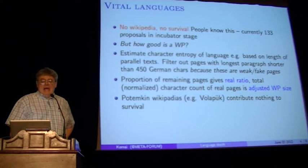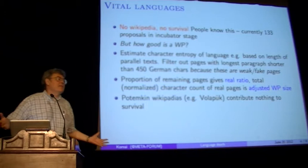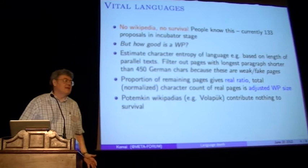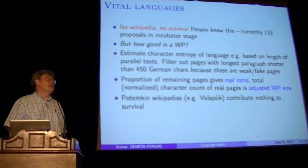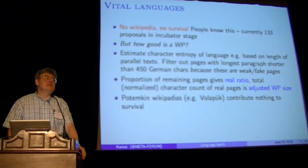A good example is the Volapük Wikipedia, which is entirely like a Potemkin village. Once you apply this filtering, there is almost nothing left — about 200 articles remain, about 120 of which are about dinosaurs. There is one passionate dinosaur believer in that group. 99.7% of the articles are automatic translations from some kind of geographical gazetteer — auto-generated material that contributes nothing to the survival of a language.